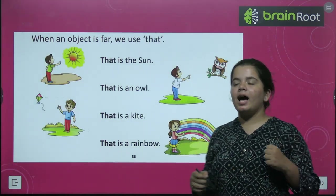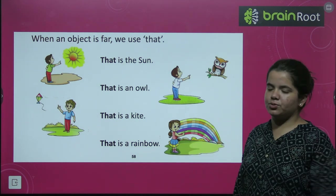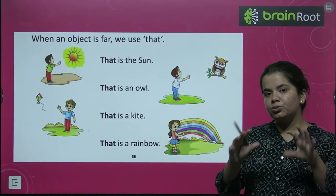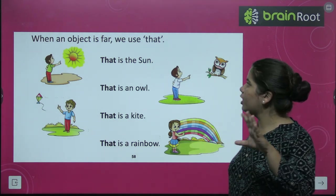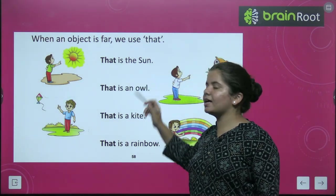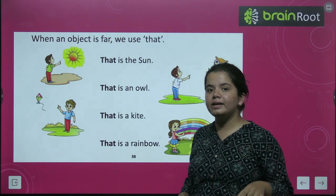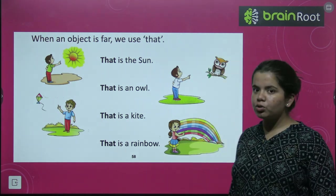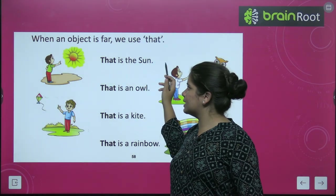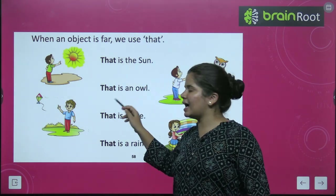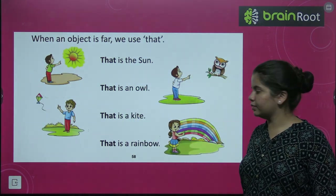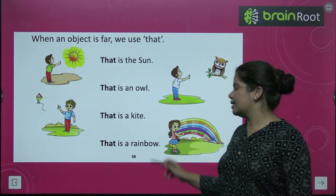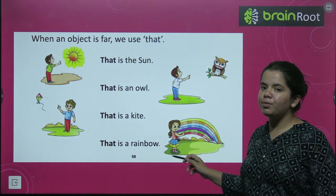Very good. अब हम देखेंगे 'that' कभी यूज होगा. 'That' use होगा किसी ऐसी चीज के लिए जो आपसे दूर हो, जो आपसे far हो. जैसे: that is the sun — sun हमसे बहुत दूर होता है ना. That is an owl. That is a kite. That is a rainbow.